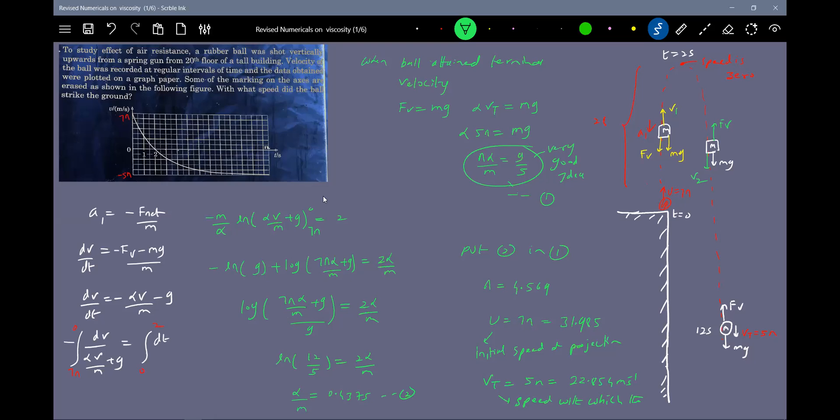So the speed with which the ball strikes the ground is 22.854 m/s. Now, regarding viscosity, I think in our books we didn't have much discussion. But whenever the ball is projected from a tower of large height, after ascending some distance and then descending, it will attain terminal velocity, and when striking the ground it will strike with terminal velocity.